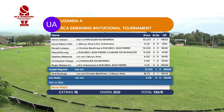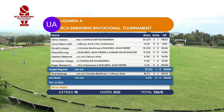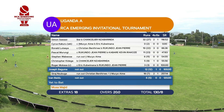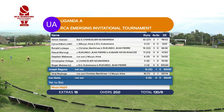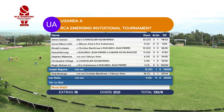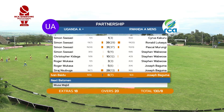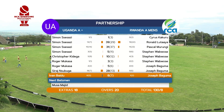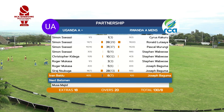Starting from the beginning: Simon Saysazi 32 off 27 with two boundaries and one maximum; Lutair Ronald scoring 19 off 22; Pasco Murunji 11 off 23; a couple of single digits; Joseph Bagouma with 12 off 12; Siraj Subuga with an important cameo of 18 off seven; 18 extras done here.